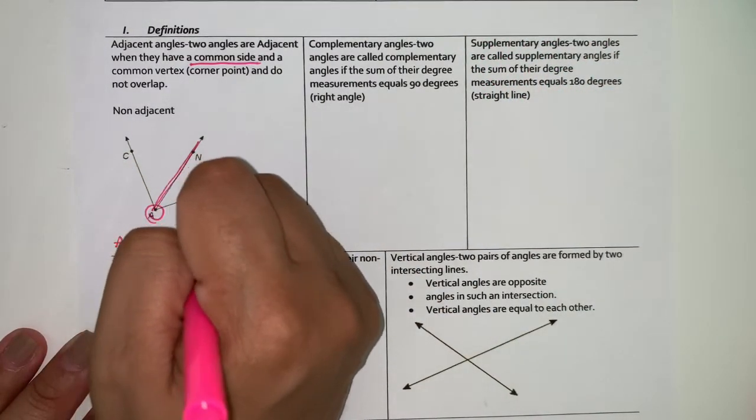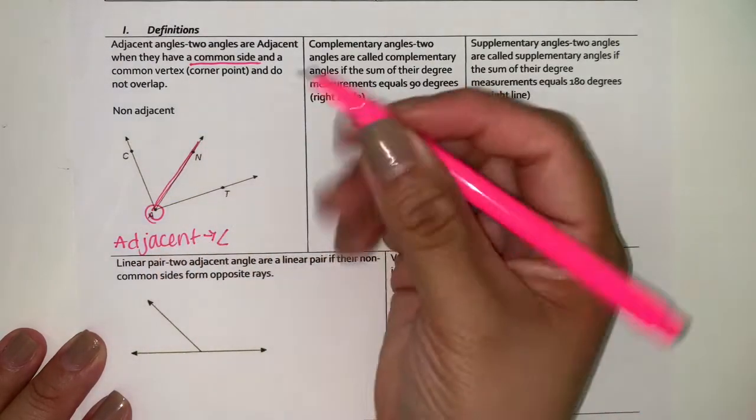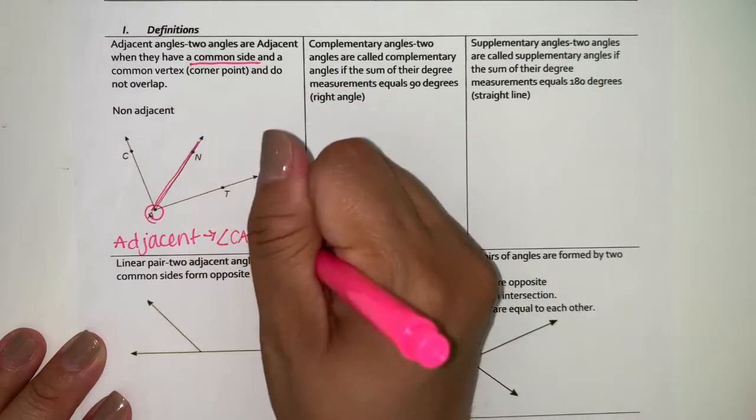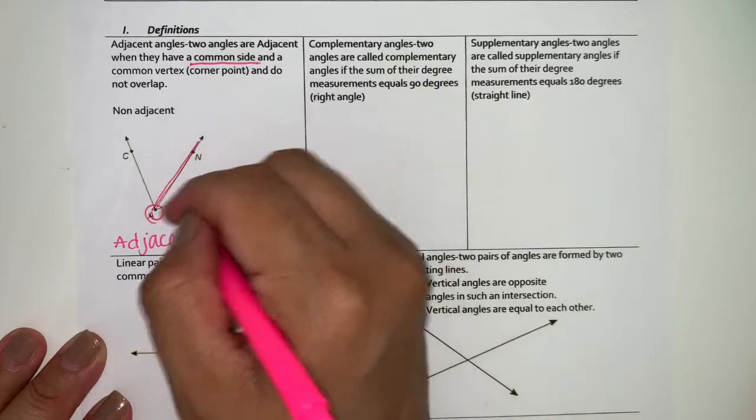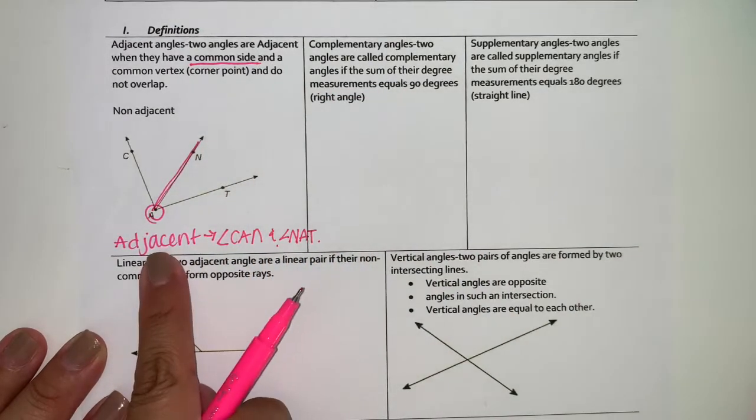If I asked you to identify the adjacent angles, you would say that you have angle CAN and angle NAT. So those would be your adjacent angles.